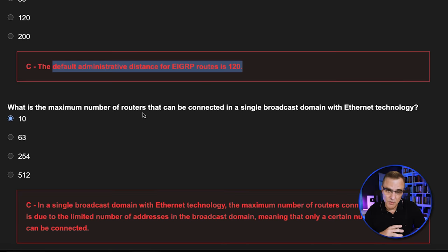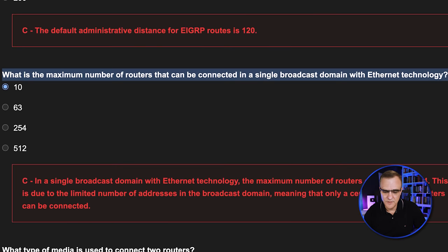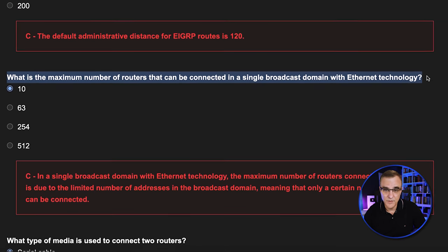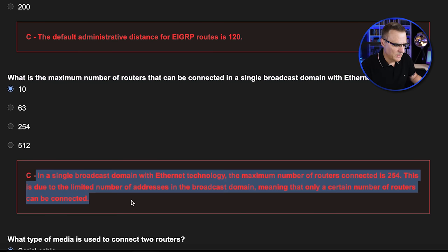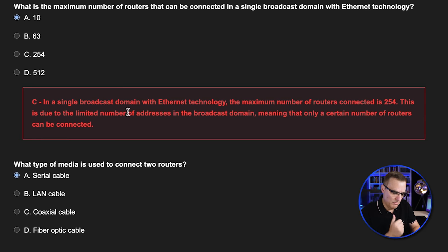Some questions may just not make sense. For example: what is the maximum number of routers that can be connected in a single broadcast domain with Ethernet technology? We're told the answer is C, so 254. But think about that — who is going to put 254 routers on an Ethernet segment? And is that actually correct? Because that's determined by the subnet mask, not by Ethernet. If you decided to use a /28 mask, you wouldn't have 254 hosts on that segment, let alone routers.